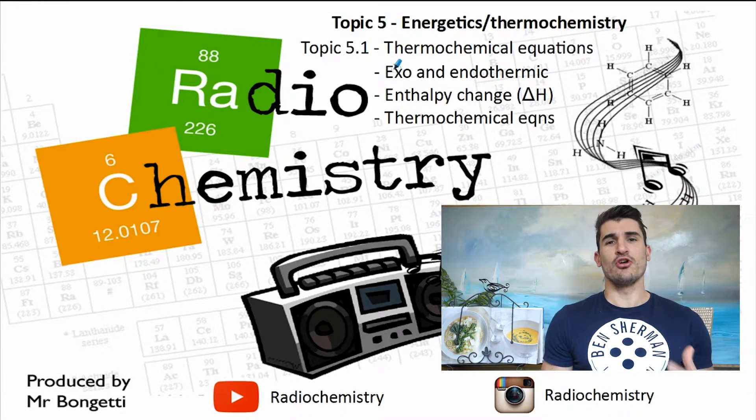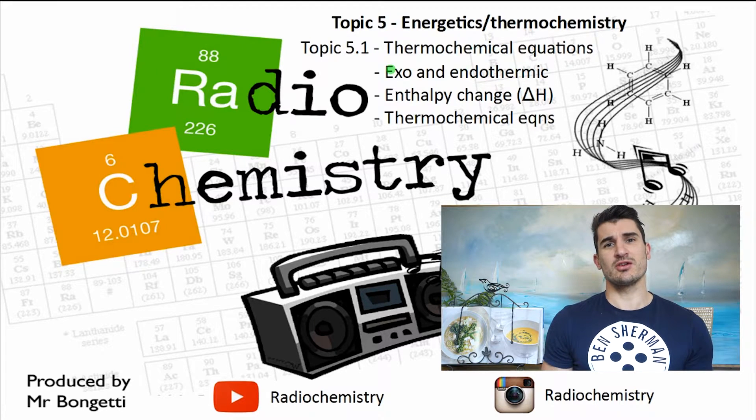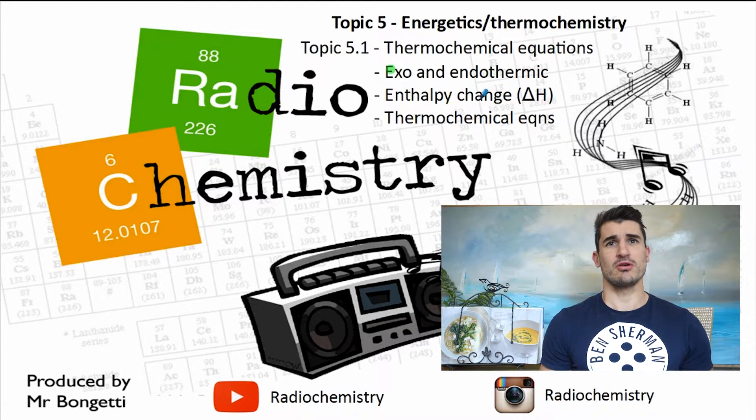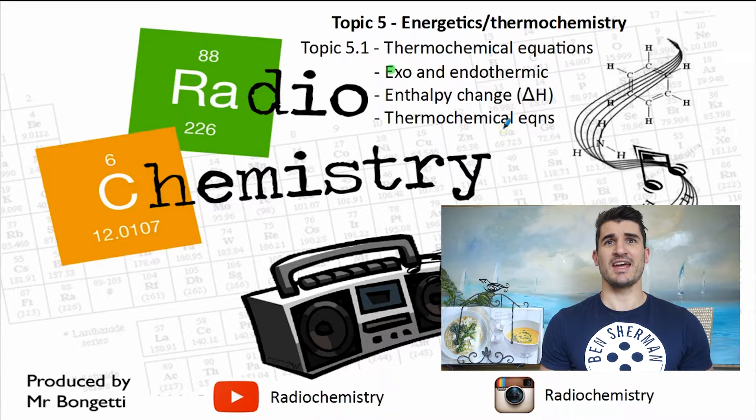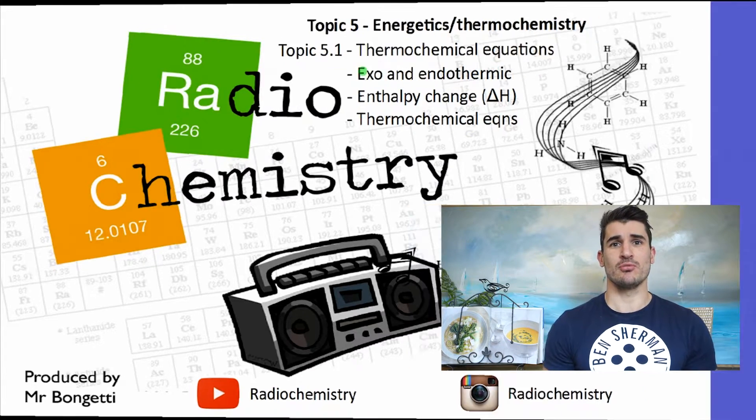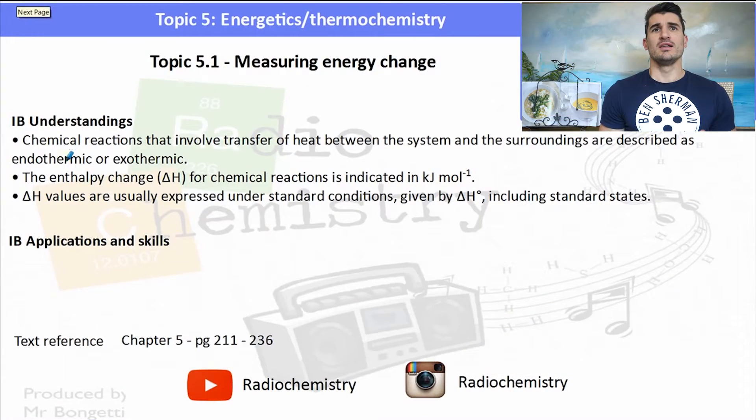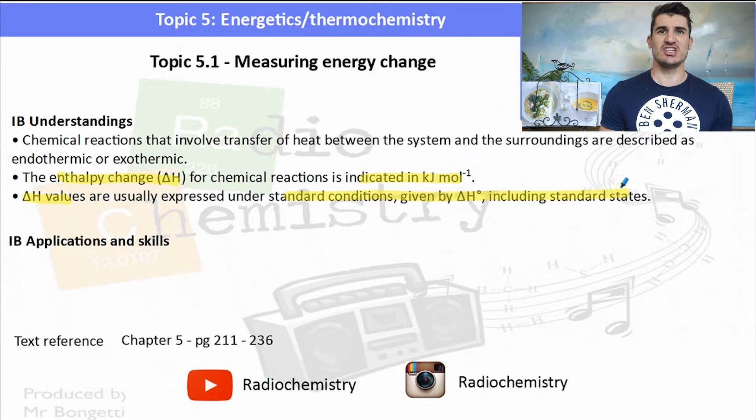Okay, 5.1 we look at thermochemical equations. We look at exothermic and endothermic thermochemical equations. We discuss delta H and we look at writing a thermochemical equation. The IB understandings, we've looked at a couple already but in this one we talk about enthalpy change H and what it means and we also talk about the conditions for a delta H calculation.